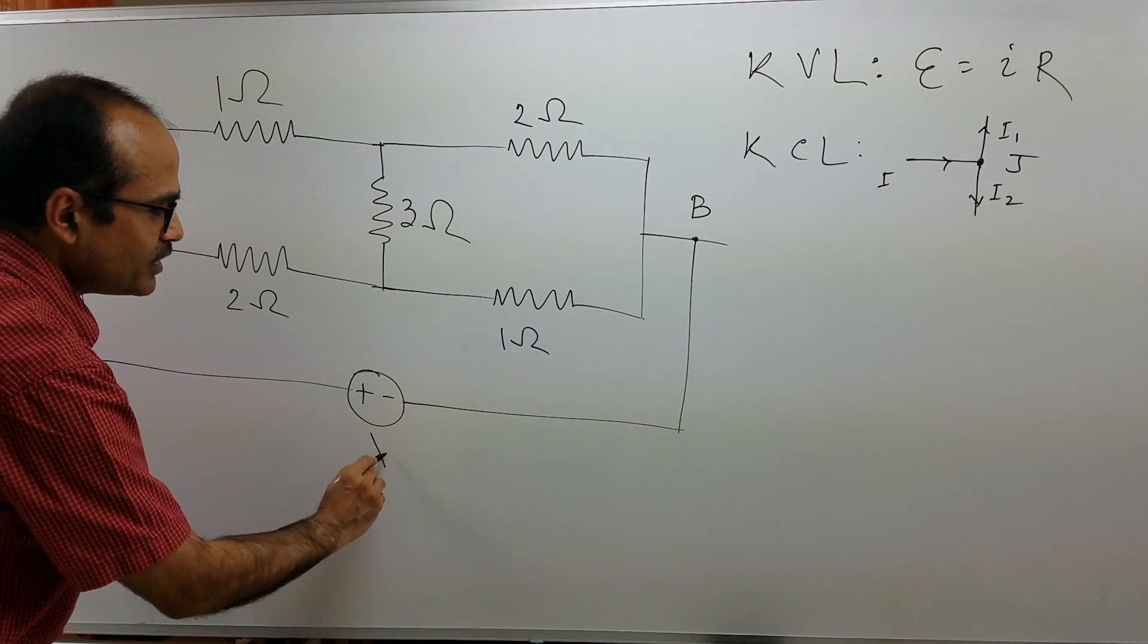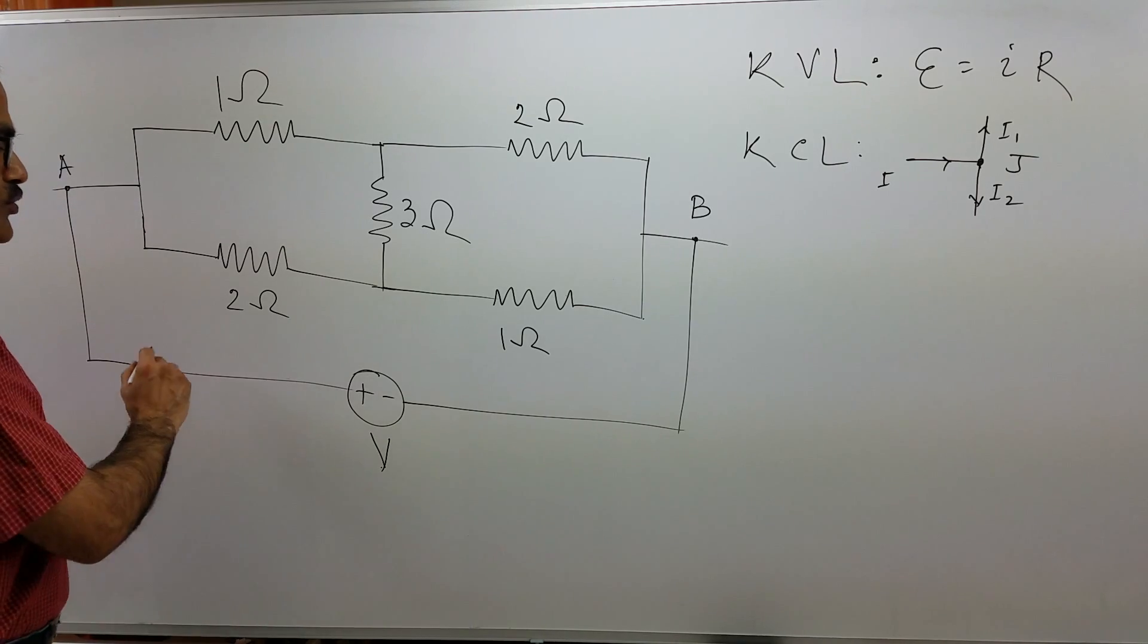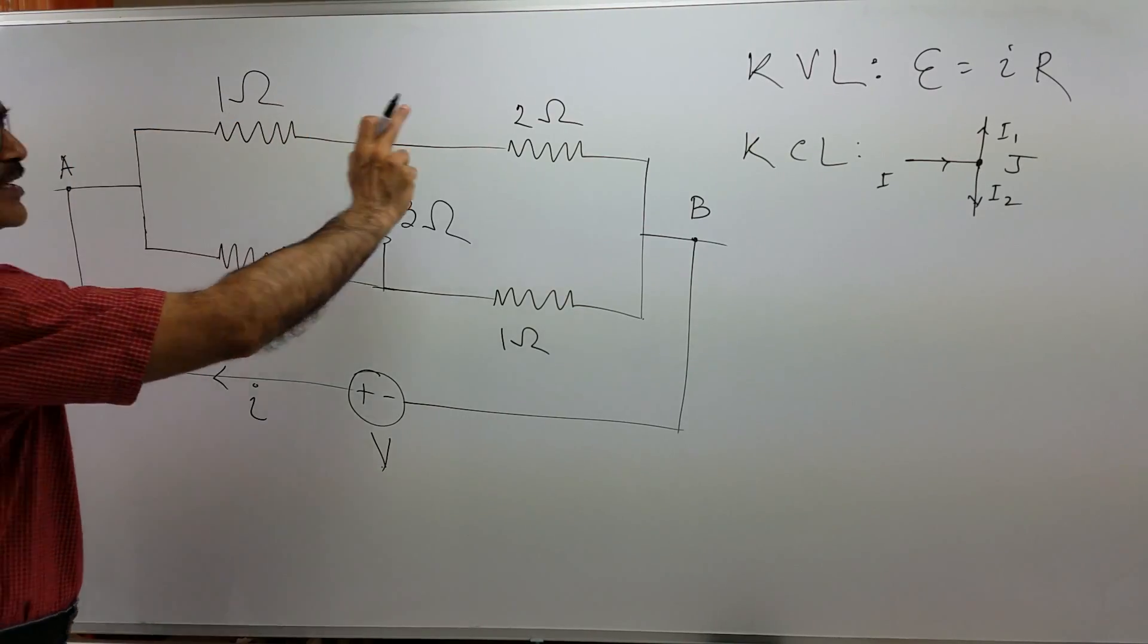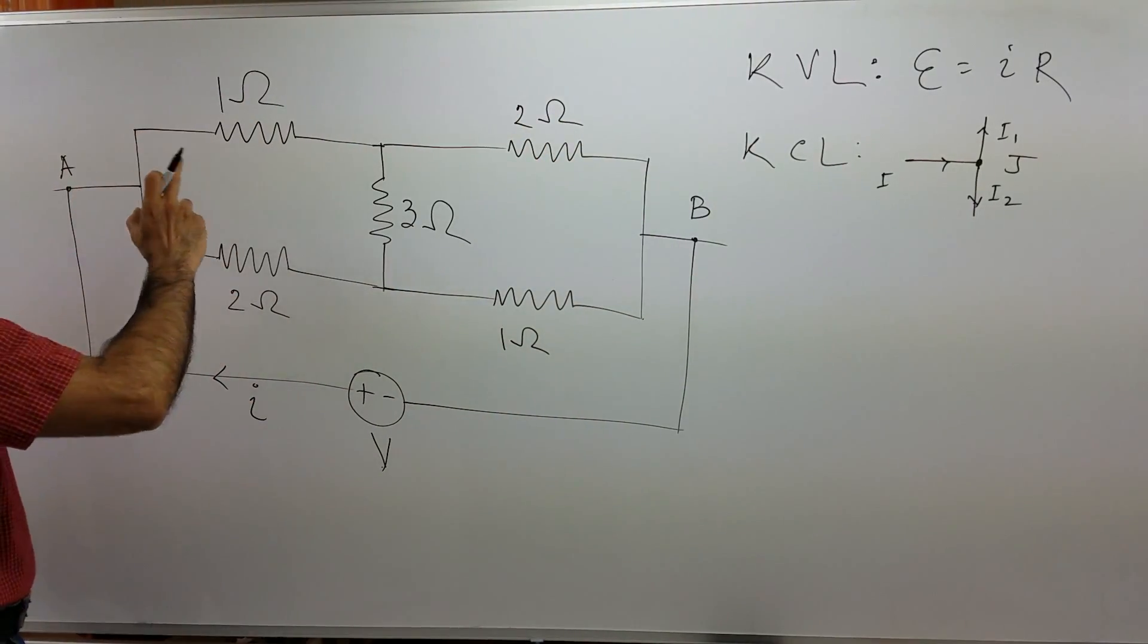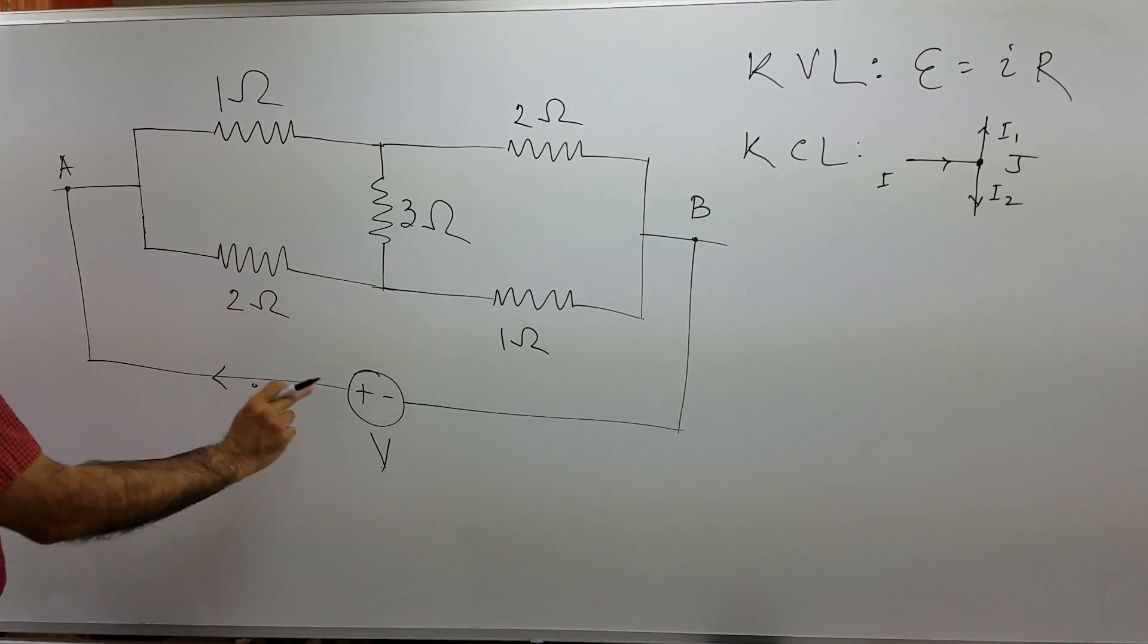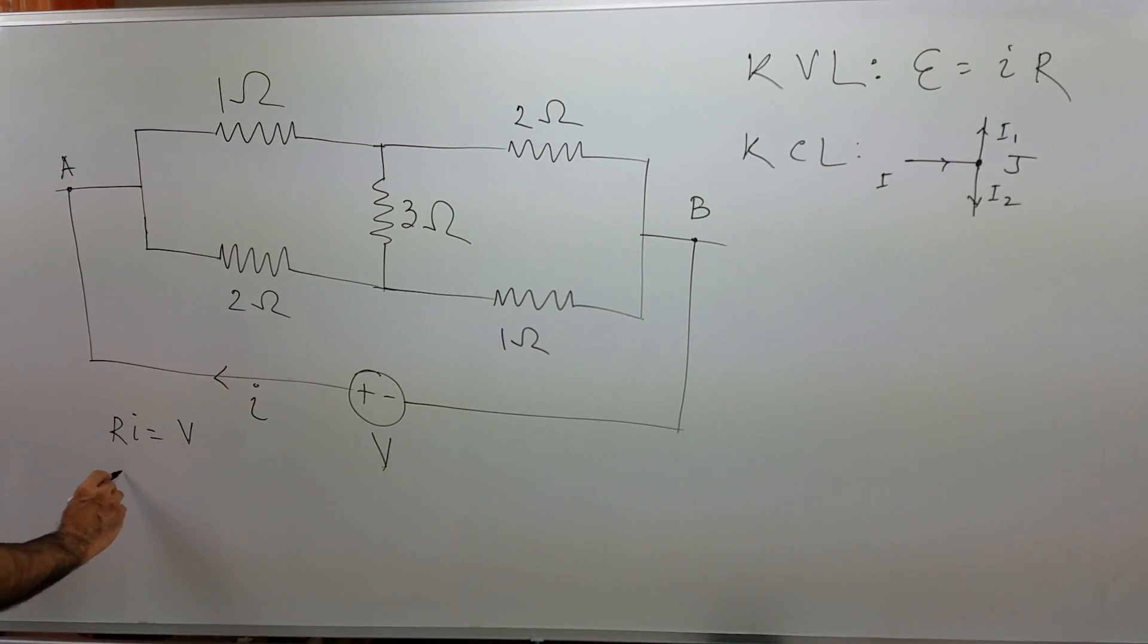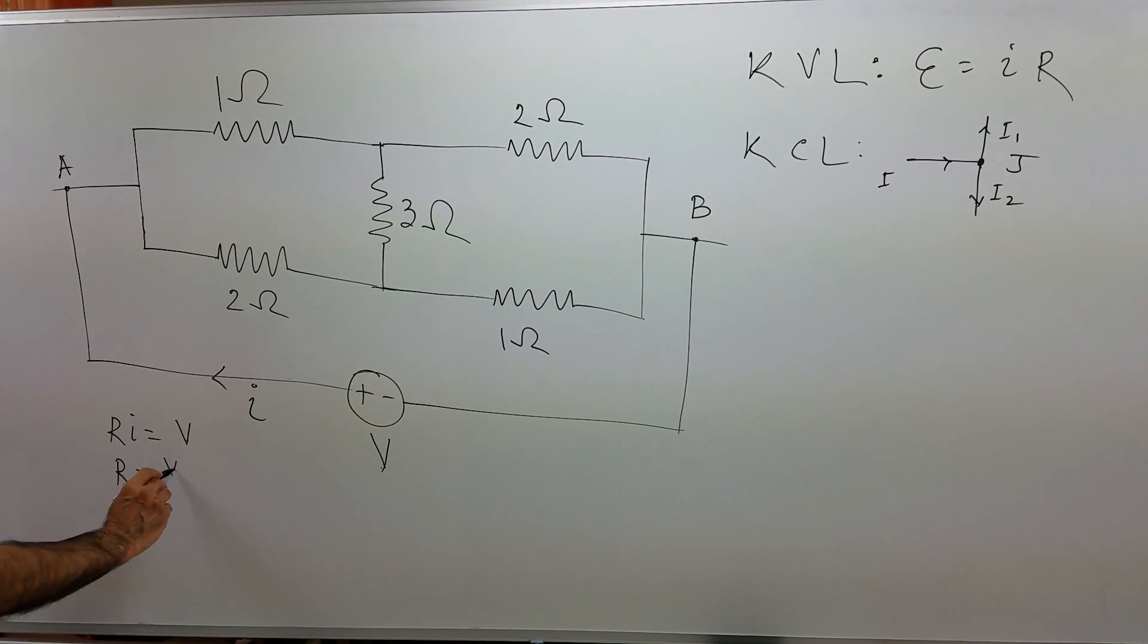Let the cell EMF be V and suppose this cell supplies a current I to this circuit. If the resistance between A and B is R, then R times I equals V. So dividing both sides by I, I get R is equal to V over I.